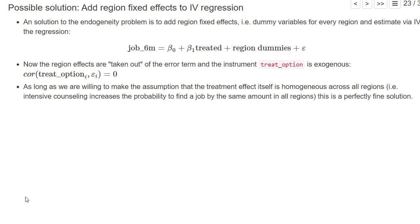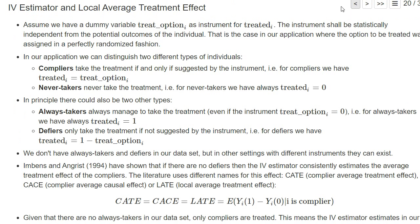However, if we allow for general heterogeneous treatment effects, and maybe these heterogeneous effects also depend on the different regions, so if we're in our Rubin causal model framework, then just adding the region dummies does not necessarily make our instrumental variable estimator estimate the local average treatment effect. Let's go back to the slides where we explained this, when I said what does an IV estimator measure. This LATE could also be called the complier average treatment effect.